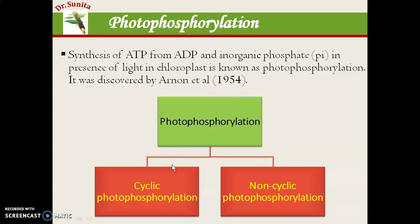Photophosphorylation is of two types: cyclic photophosphorylation and non-cyclic photophosphorylation. In cyclic photophosphorylation only one photosystem is involved — photosystem 1. In non-cyclic photophosphorylation both photosystem 1 and photosystem 2 are involved.